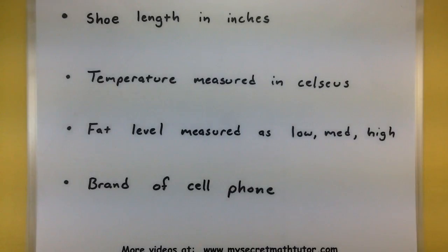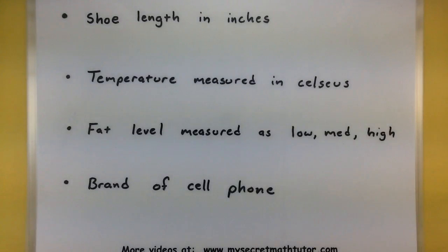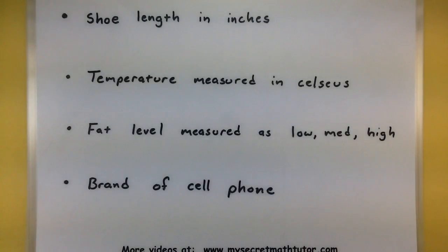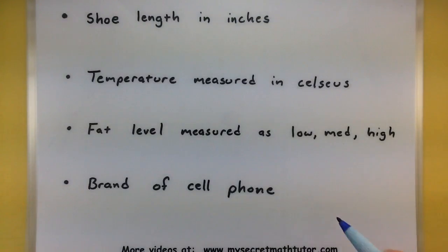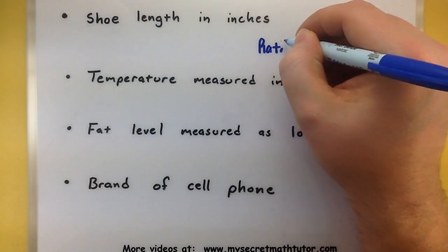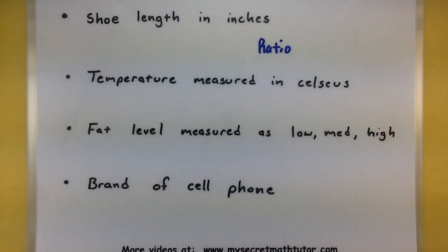I'm measuring shoe length in inches, trying to figure out how long people's shoes are. First: can it be ordered? Yes — I've got smaller shoes and larger shoes, they have an order. Second: can I take differences in shoe length, and does that matter? If somebody is wearing a 30-inch shoe versus a 10-inch shoe, then that shoe is going to be three times larger — taking differences makes a difference. Does zero correspond to none of the value? If I have a shoe length of zero, it means there's absolutely no shoe length — there's no shoe. So I'll put this at the ratio level.